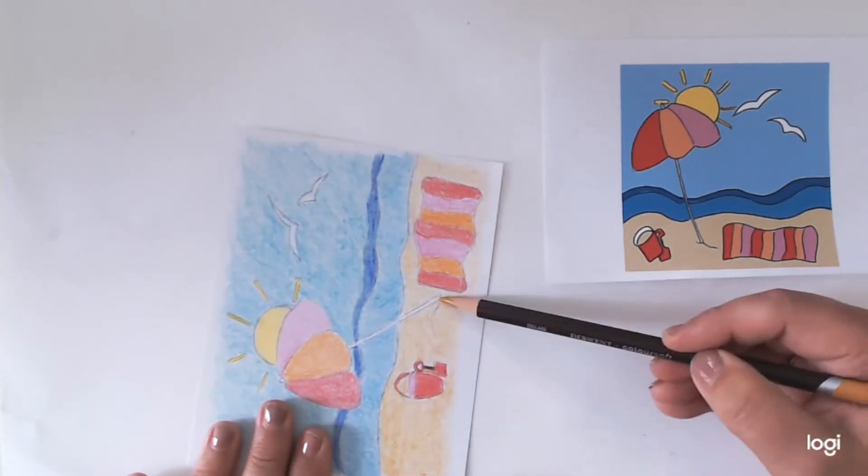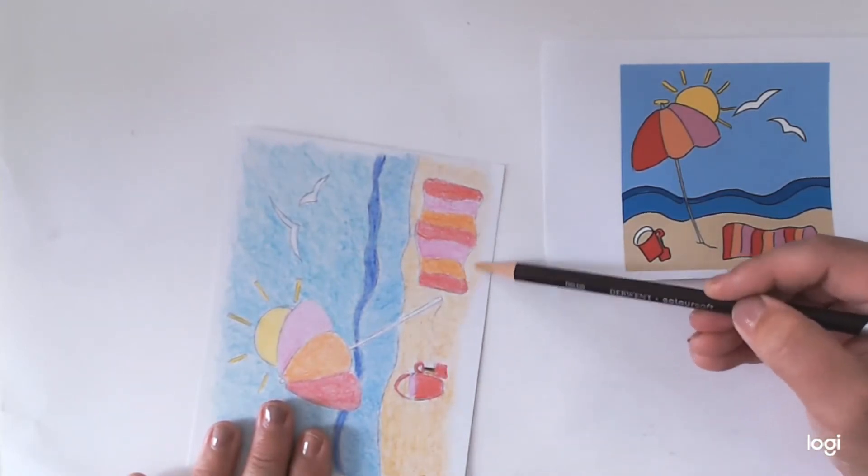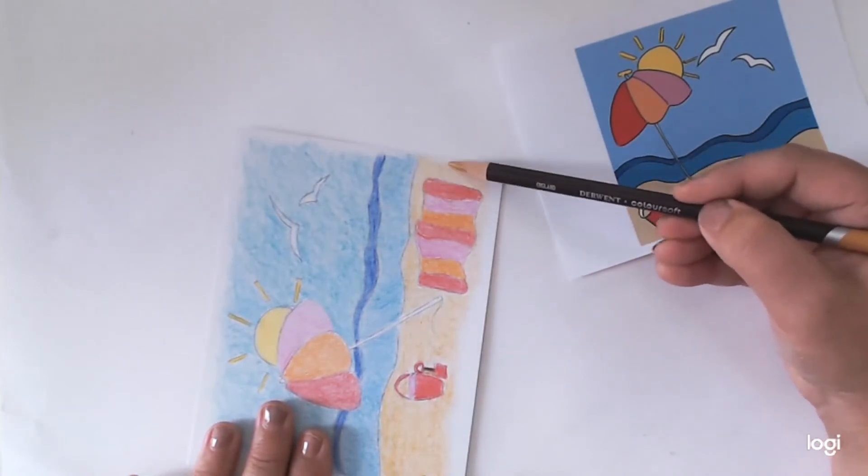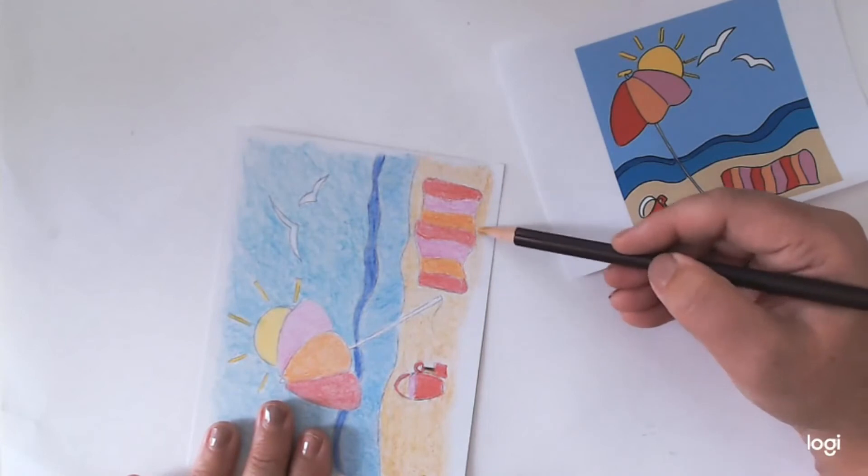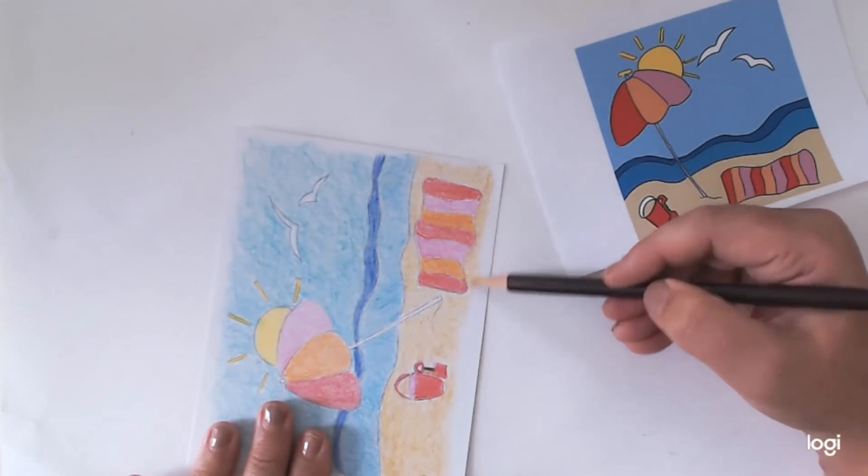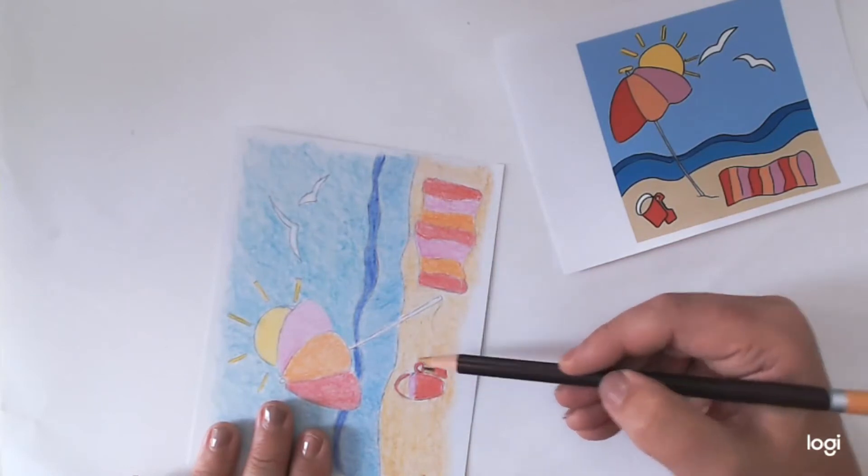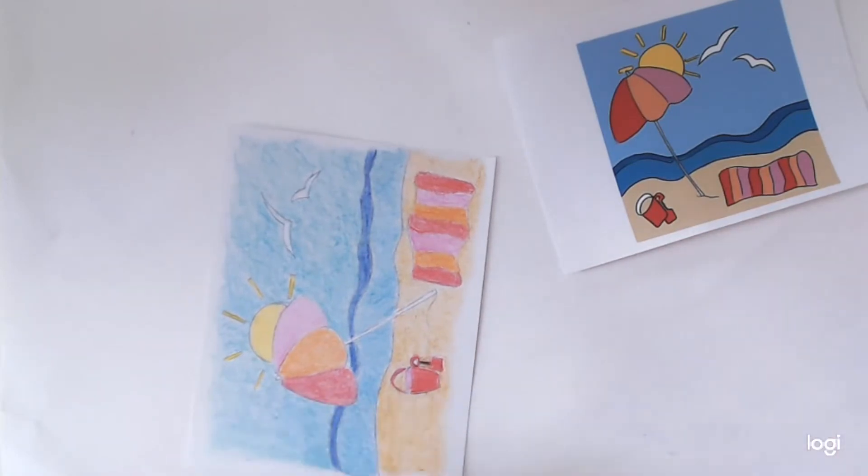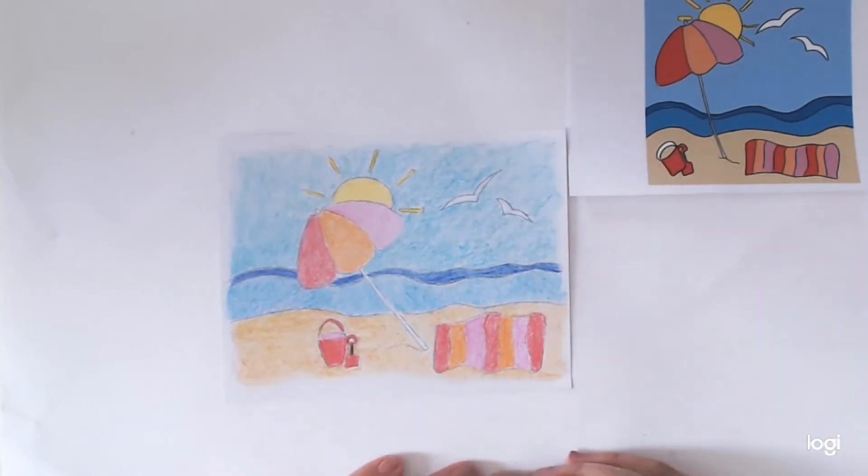Because we've done the first layer in circles and we haven't really got any streaks down, we can now go over it in lines because you won't see them. And I'm going to get the point to go into these little grooves to make sure there is enough color on those as well. And like I said, you can keep going with your layers until you are completely happy. We will go over and blend again in a minute.